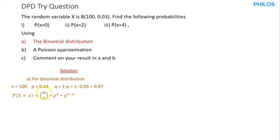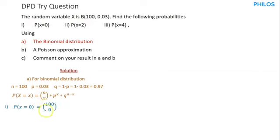When you look at this question, we know our n, p, and q already. The x will be specific to each sub-question. For Roman numeral (i), we should find the probability that x is exactly 0. So P(X = 0) equals 100 combination 0, times 0.03 exponent 0, times 0.97 exponent (100 minus 0).